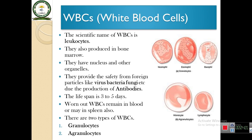There are two types of WBCs: granulocytes and agranulocytes. Granulocytes are neutrophils, eosinophils, and basophils — they are called granulocytes because granules are present in these cells. 'A' means 'not', so agranulocytes are cells which do not have granules inside. Looking at the diagram, you can find granules in basophils, eosinophils, and neutrophils, while monocytes and lymphocytes are the cells which have no granules inside.